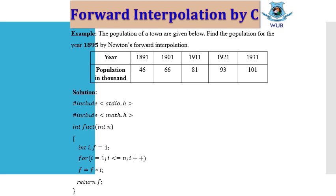Now, there is a question given here for all of you. The question provides two rows: one row mentions the year and the other row mentions the population of a particular town or city for a specific year. You have to find out the population of the year 1895 by using Newton's forward interpolation. This is a similar question that I have already solved in the theory class, and I put the same problem here so you are already familiar with it and can solve it using C programming.